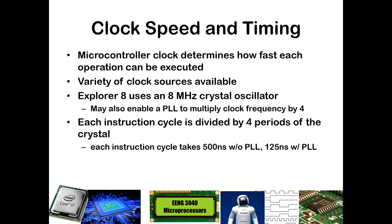If you take 8 MHz and divide that by 4, that gets us down to a 2 MHz clock, which works out to 500 nanoseconds per instruction cycle if we're not using the PLL. If we are using the PLL, we get one-fourth of that — 125 nanoseconds per instruction cycle. As we will see shortly, some instructions take one cycle and some take two cycles, so for two-cycle instructions it will take one full microsecond without the PLL, or 250 nanoseconds with the PLL.